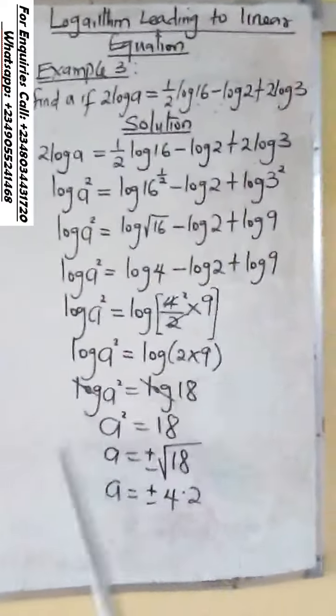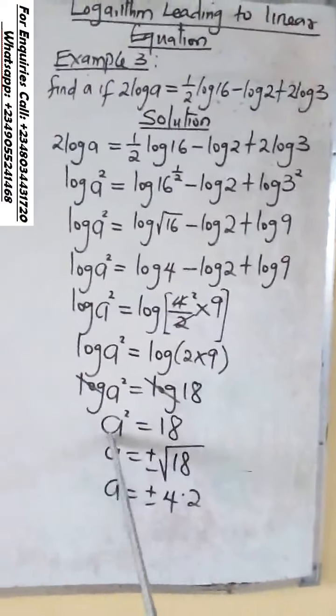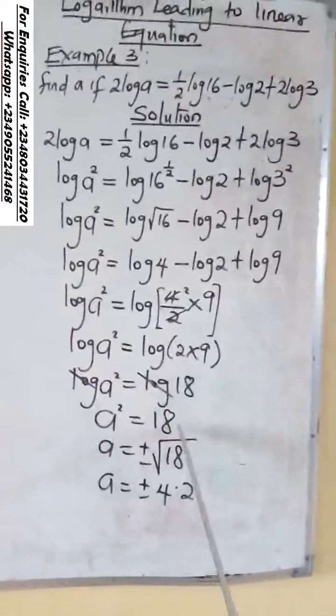So, we have the same log on both sides. Eliminate it. You will have A square equals to 18.